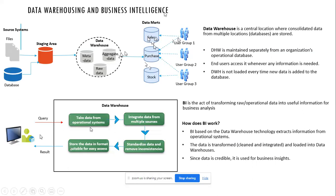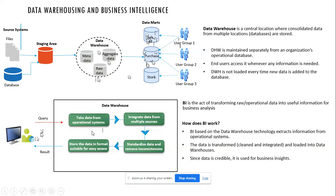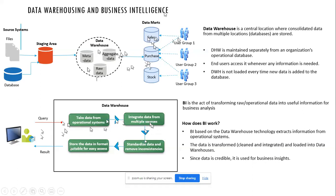A data warehouse is not intended for operational data and will not have real-time data. It will have the entire organization's data and can provide an end-to-end view of what is happening in that organization. When somebody queries a data warehouse, it takes data from operational systems, integrates data from multiple sources, standardizes the data and removes inconsistencies, and stores it in a format suitable for easy access. User groups and applications using BI — business intelligence — tools can make use of this data warehouse.